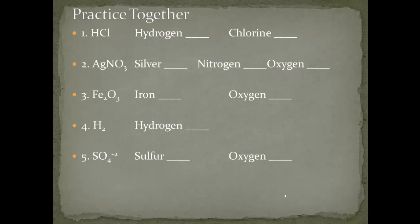Now let's do some practice. For hydrochloric acid (HCl): hydrogen is the always rule — hydrogen is always +1. If hydrogen is +1, chlorine needs to be something such that both add up to zero. Since there's one of each, chlorine must be -1. So: +1 + (-1) = 0.